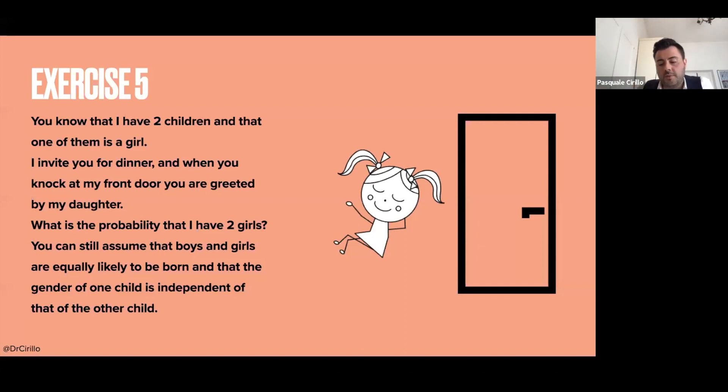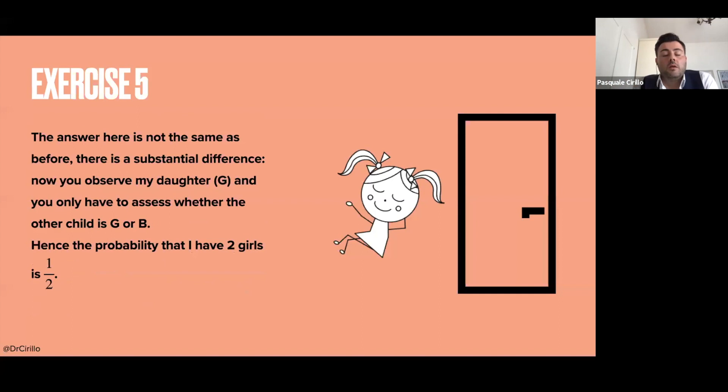Now here you see the difference. The answer that we get for this exercise is not the same answer that we have for the previous one. In the previous one, we had one third. In this exercise, the probability that I have two girls is one half.